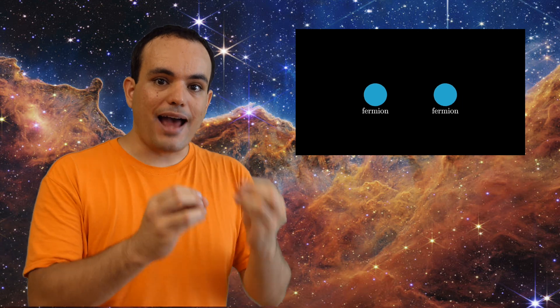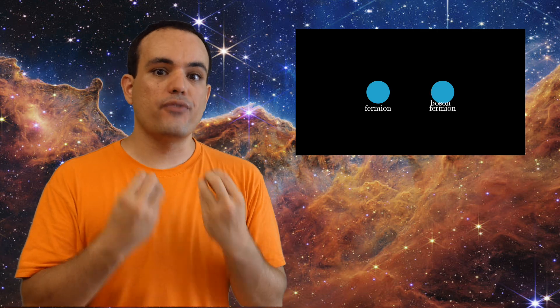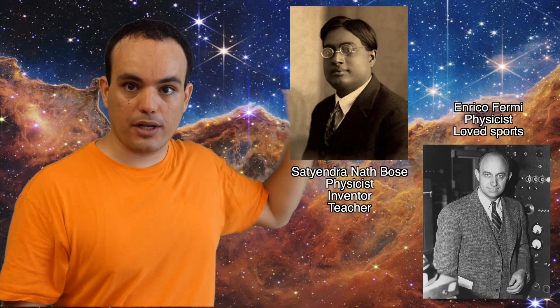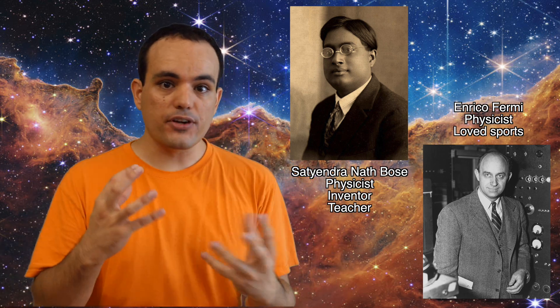these interactions require the exchange of another particle, like a photon. The particles that are exchanged are known as bosons, and the particles doing the exchanging are known as fermions. These names come from Satyendra Bose and Enrico Fermi, because the work they did allowed us to understand the difference between these two kinds of particles. And this gets